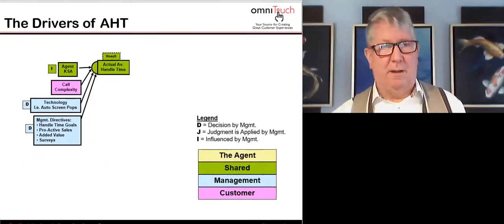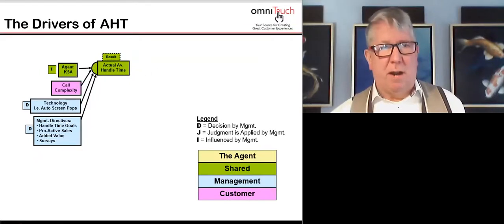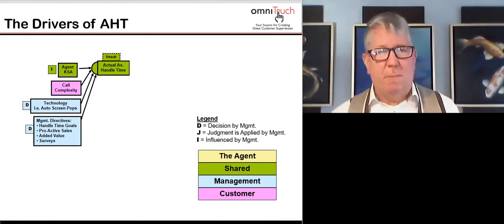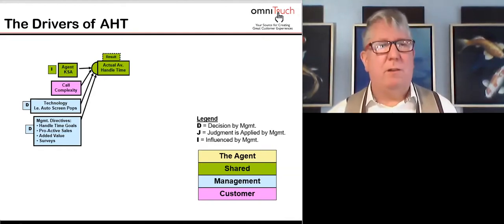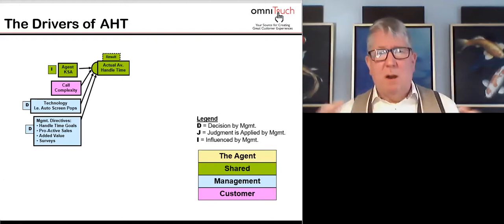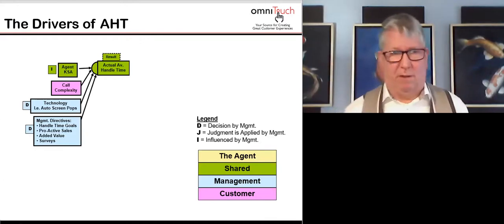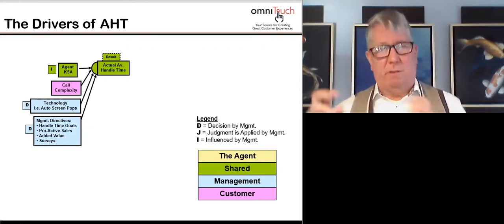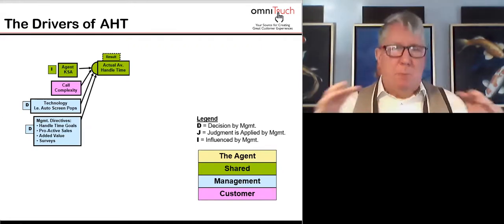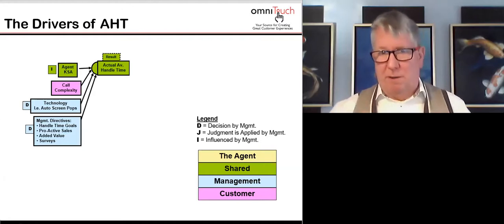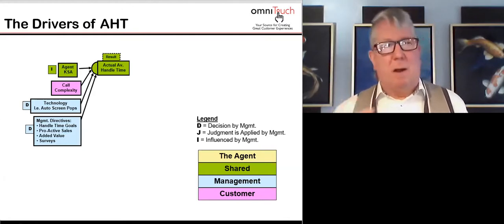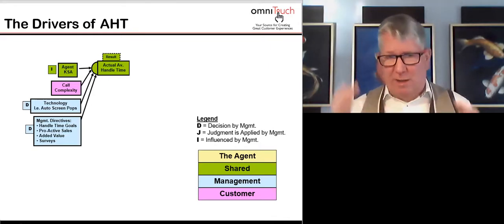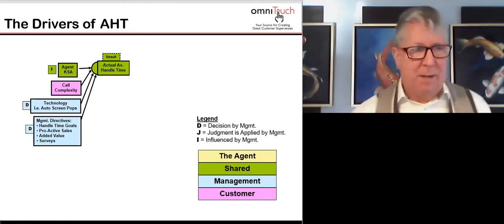I've broken out just the drivers of average handling time. The color coding matters: yellow means the agent is responsible or in control; green means shared responsibility between agents and management; blue means it's under the control of management; and pink means it's driven primarily by the customer. This lets you see who's responsible for what.